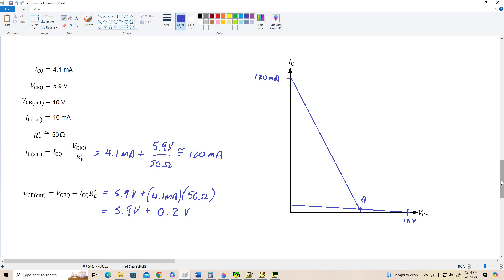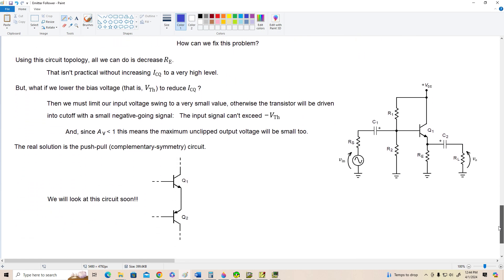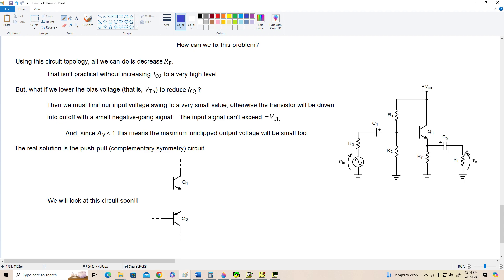Alright, so how could we fix this problem? Well, what we could do is decrease the value of Re to the same level as RL, but that would increase our quiescent collector current to some astronomically high value. And we don't want to do that. So you might think, well, to compensate for decreasing Re, let's decrease our Thevenin voltage over here so that we don't get so much current. But then we'll reduce our base voltage to such a small level that we can't apply a very big input voltage without reverse biasing the base emitter junction and sending the transistor into cutoff. So none of those approaches is going to work.